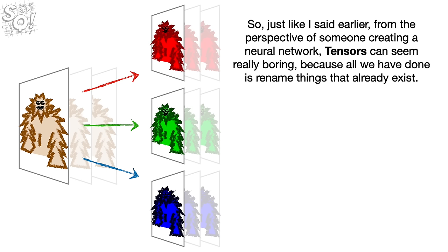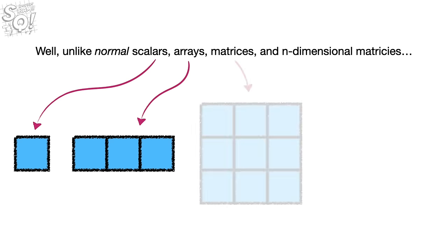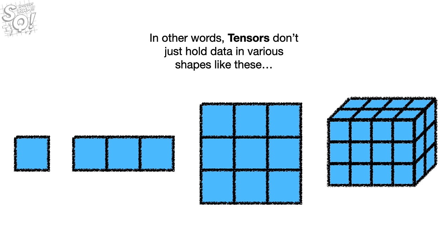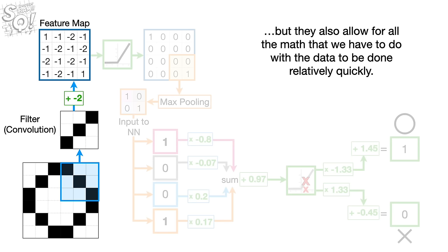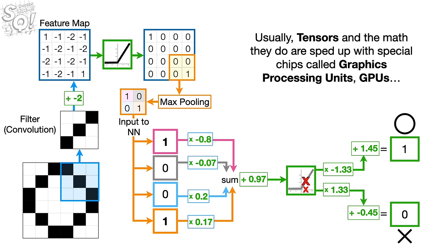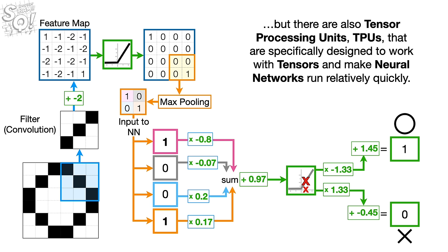So, just like I said earlier, from the perspective of someone creating a neural network, tensors can seem really boring, because all we have done is rename things that already exist. So what's the big deal? Well, unlike normal scalars, arrays, matrices, and n-dimensional matrices, tensors were designed to take advantage of hardware acceleration. In other words, tensors don't just hold data in various shapes like these, but they also allow for all the math that we have to do with the data to be done relatively quickly. Usually, tensors and the math they do are sped up with special chips called Graphics Processing Units, GPUs. But there are also Tensor Processing Units, TPUs, that are specifically designed to work with tensors, and make neural networks run relatively quickly. Double bam!